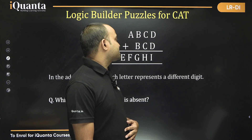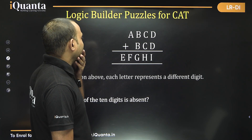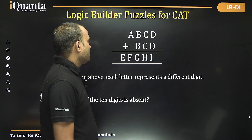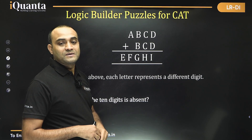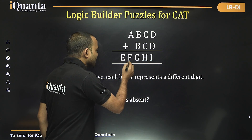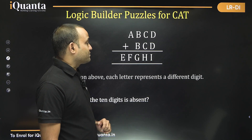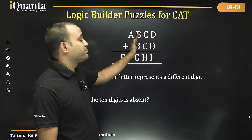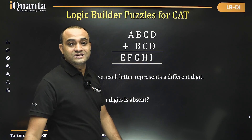Now if we start solving this puzzle, starting with A: A is a single-digit number, so A could be 0 through 9. But here we are getting E and F — two digits as the result. That means there must be some carry-forward from the previous sum; only then are we getting a two-digit result here.